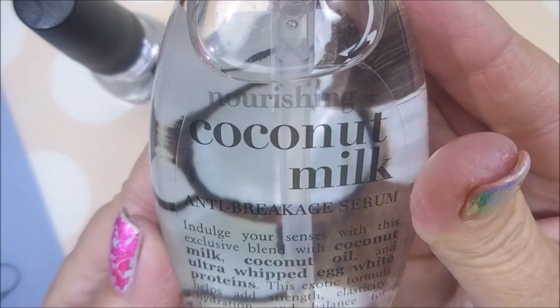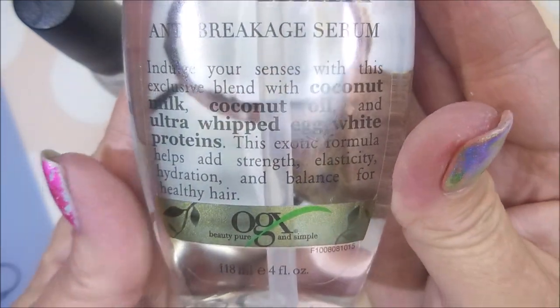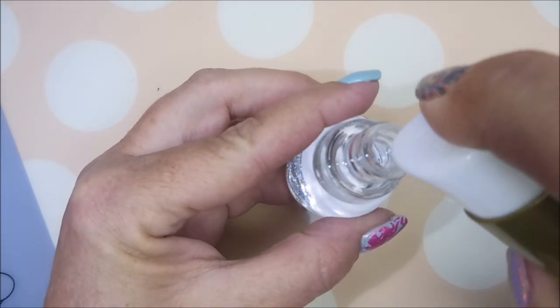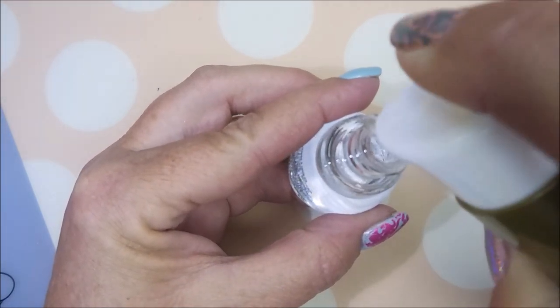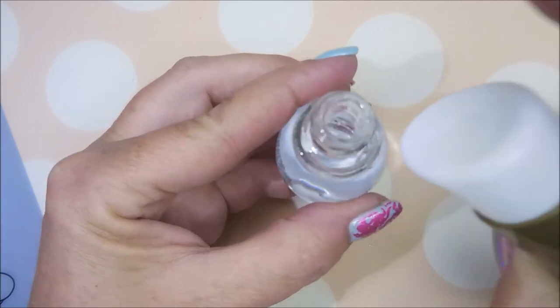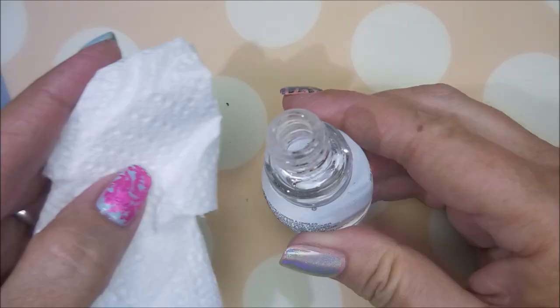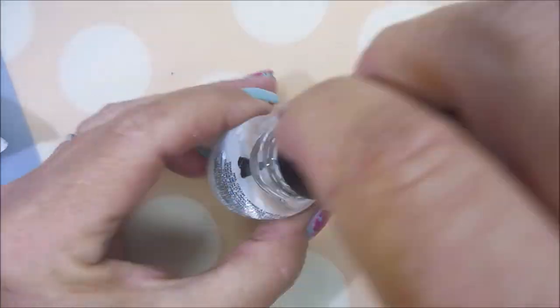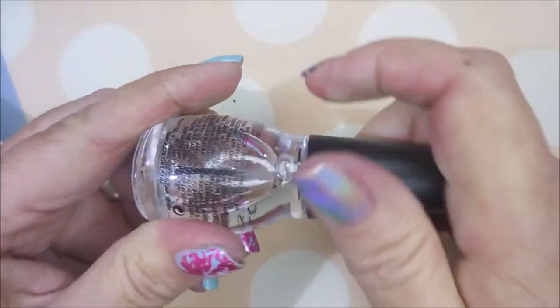I'll be using the Nourishing Coconut Milk Anti-Breakage Serum. This is for hair. So I'm going to squirt a couple of squirts down into the bottle and a little on the outside of the bottle so we'll have to clean that up. Mess maker.